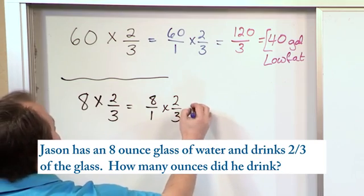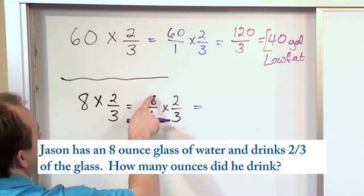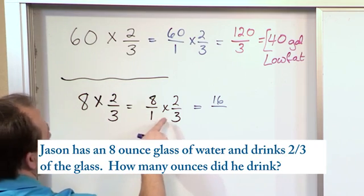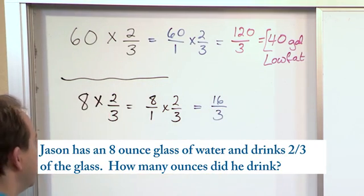All right? And then to do the actual math, eight times two gives me 16. We multiply the tops. One times three gives me three. We multiply the bottoms.